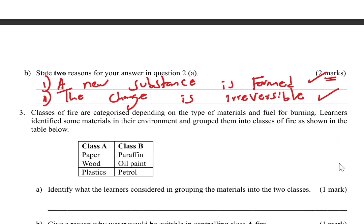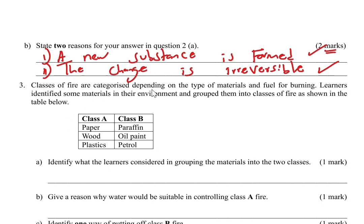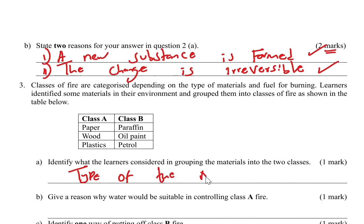Question 3: classes of fire are categorized depending on the type of materials and fuel for burning. Learners grouped materials into Class A and Class B. Part A: identify what the learners considered in grouping the materials. Class A has paper, wood, and plastic — all solids. Class B has paraffin, oil paint, and petrol — all liquids. Therefore they considered the type of material causing the fire. That scores one mark.